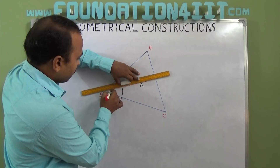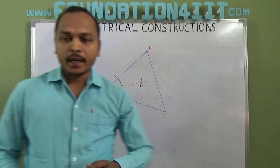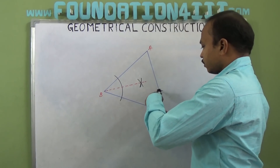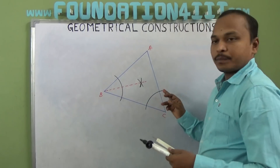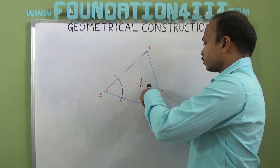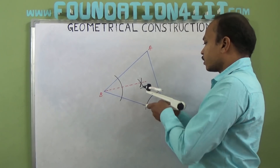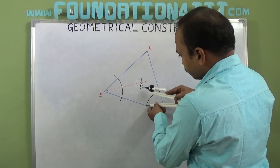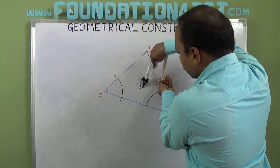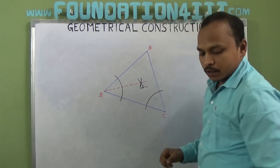For angle C, do the same angle bisecting — draw an arc while touching two points on different sides. From each of those points, draw arcs with more than enough radius to intersect. Draw an arc from one point, and from the other point draw another arc. Where they intersect, join that point to complete the angle bisector.